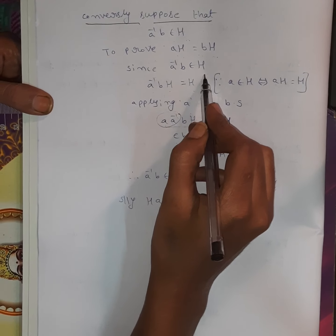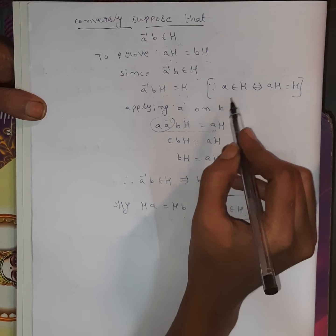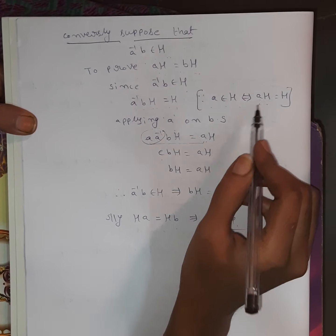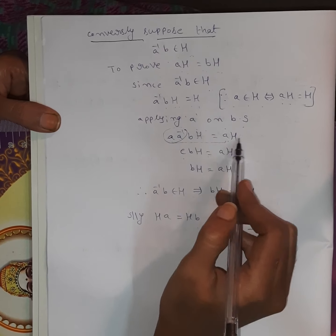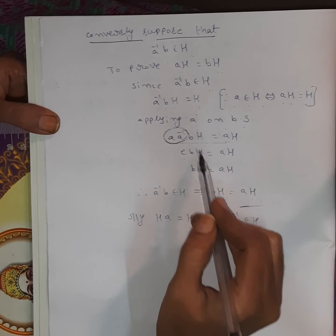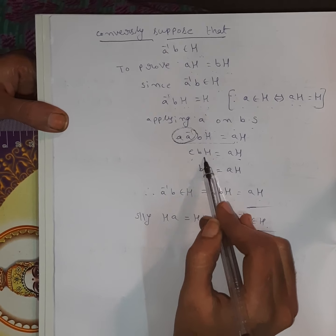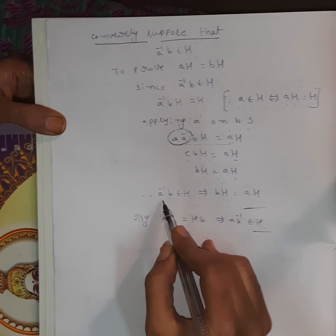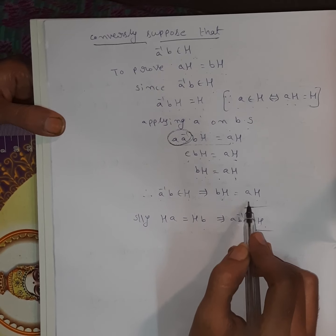Since A⁻¹B belongs to H, we have A⁻¹BH equals H, using the property that A belongs to H if and only if AH equals H. Applying A on both sides: A times A⁻¹BH equals AH. Since A times A⁻¹ equals E, we get EBH equals AH, so BH equals AH. Therefore A⁻¹B belongs to H implies BH equals AH.